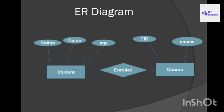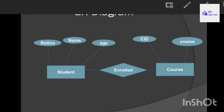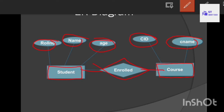Here is an example of an ER diagram. Student is one entity and course is one entity. Student consists of properties like roll number, name, and age. Course also consists of properties like course ID and course name. The student entity is related to the course entity using the relation enrolled — student is enrolled in course.